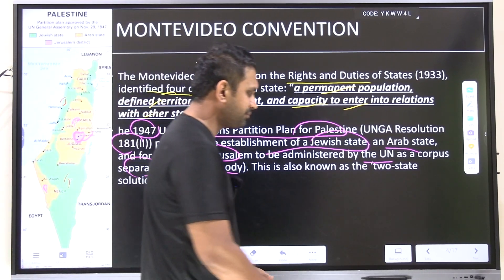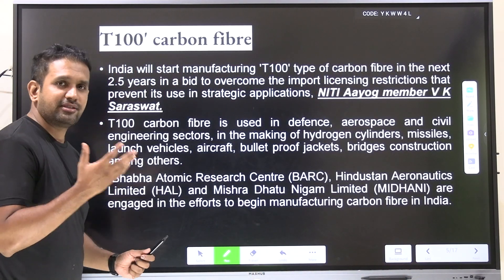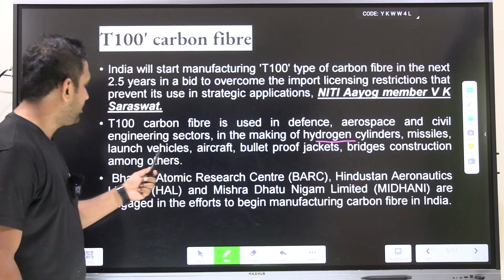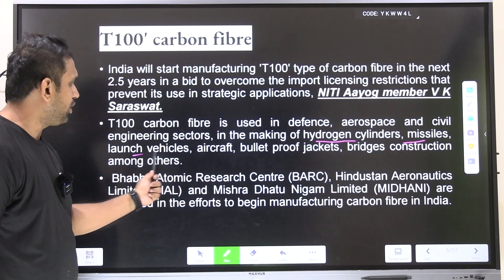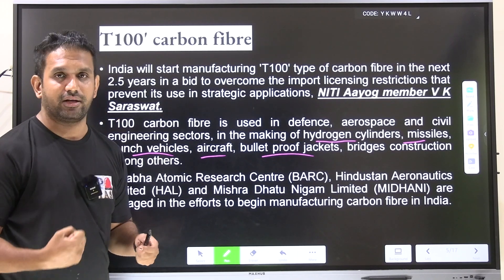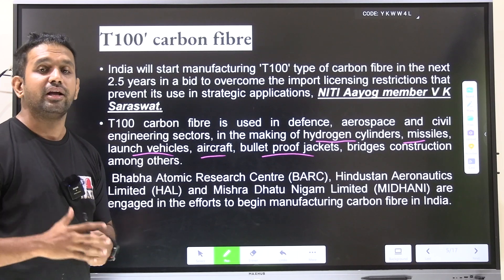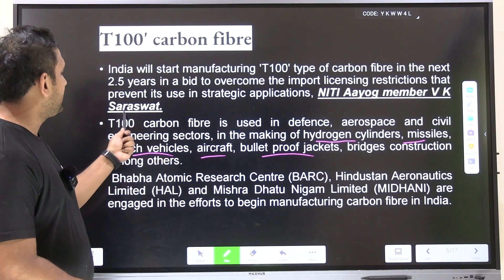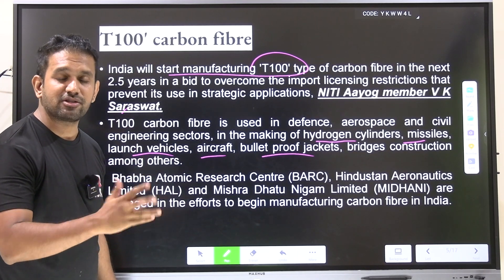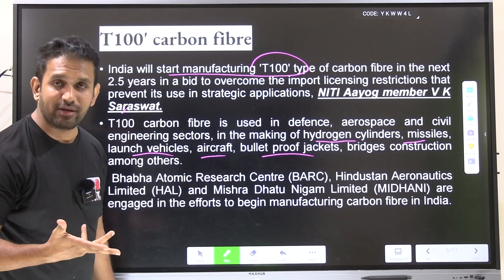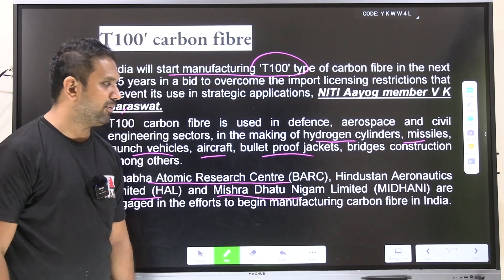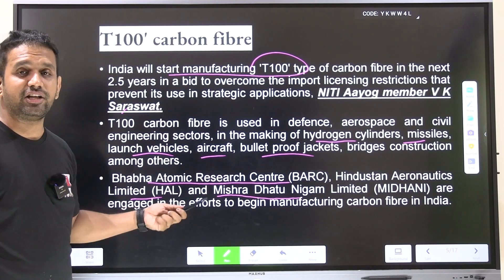T-handed carbon fiber is very important in making defense products such as hydrogen cylinders, missiles, PSLV/GSLV launch vehicles, aircraft, and bulletproof jackets. Currently India imports this fiber. NITI Aayog member V.K. Saraswat has said India will start manufacturing T-handed carbon fiber within 2.5 years — by 2027. Institutions involved include Bhabha Atomic Research Centre, Hindustan Aeronautics Limited, and Mishra Dhatu Nigam Limited (MIDHANI), based in Hyderabad.